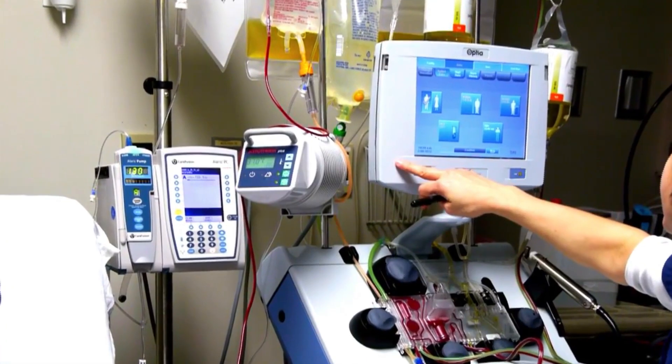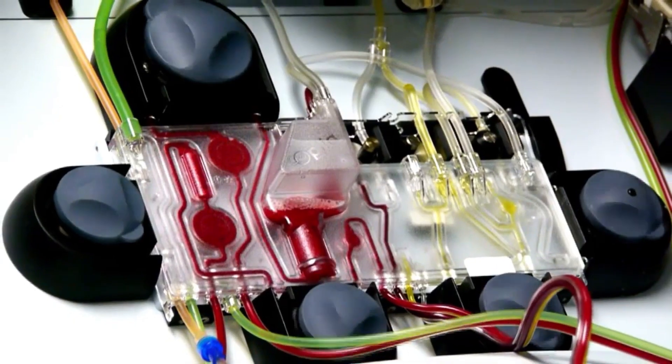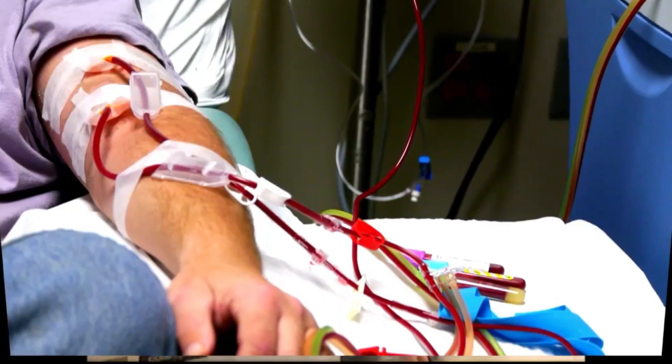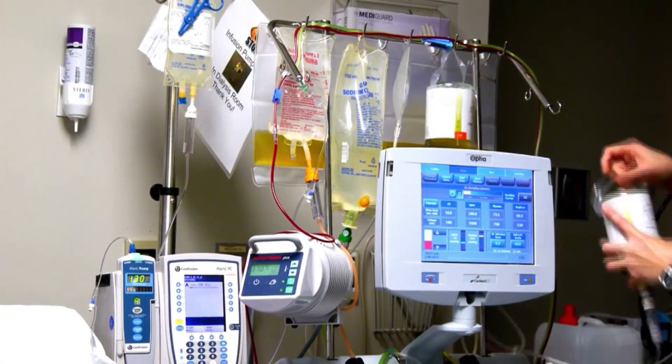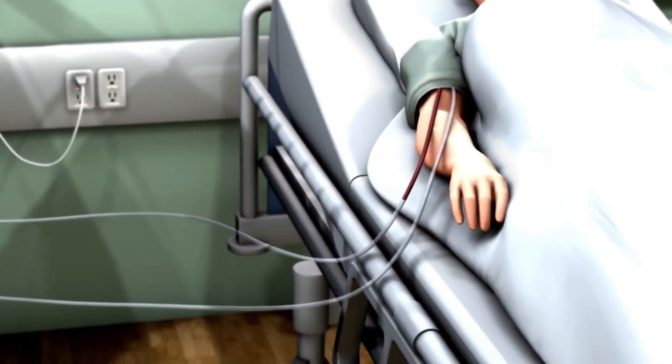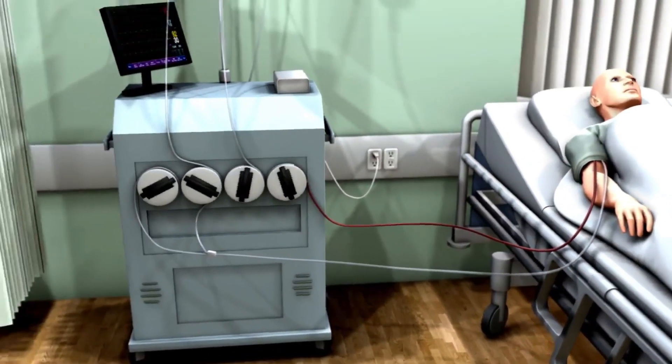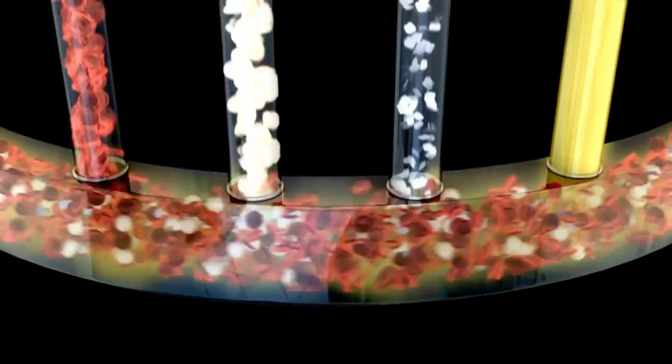How does the apheresis machine work? Apheresis units incorporate polyvinyl tubing that draws blood from the patient and moves it through centrifuges and or filters to separate blood products. The blood is then returned to the patient via tubing or is collected in bags, often suspended from a pole, for donation or disposal.